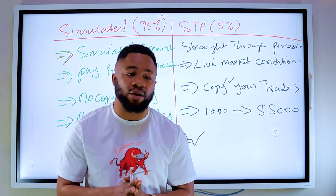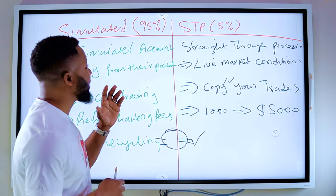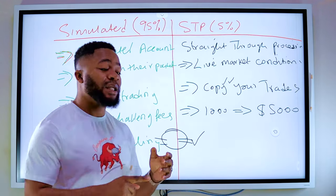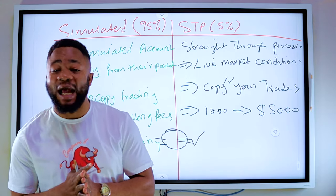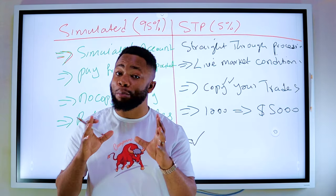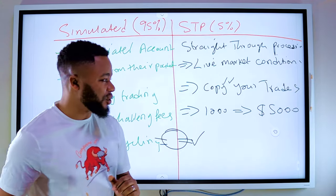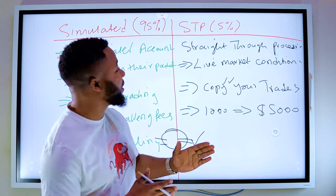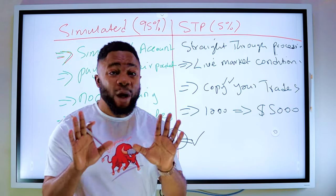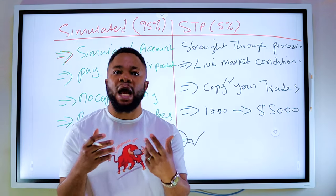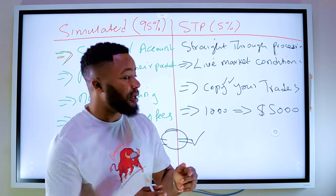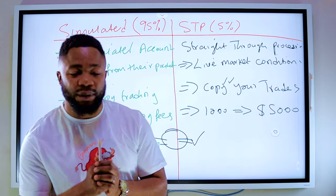When it comes to pro firm trading we have two models: we have the simulated model and we have the STP model. Just from the way the name goes, simulated model means even when they give you phase one, phase two and say you are trading on live, you are still trading on simulated or demo money. STP stands for straight through processing, meaning even when you've gone live and they say this is your live account, they actually put you on live market conditions backed by live capital.